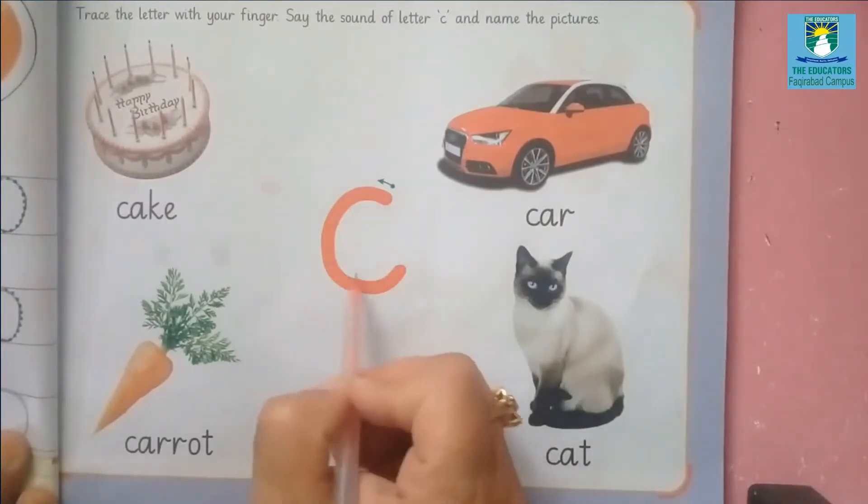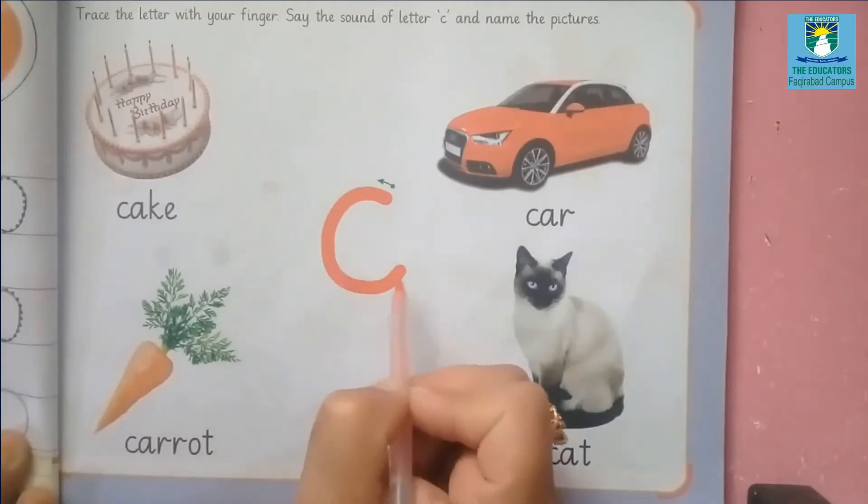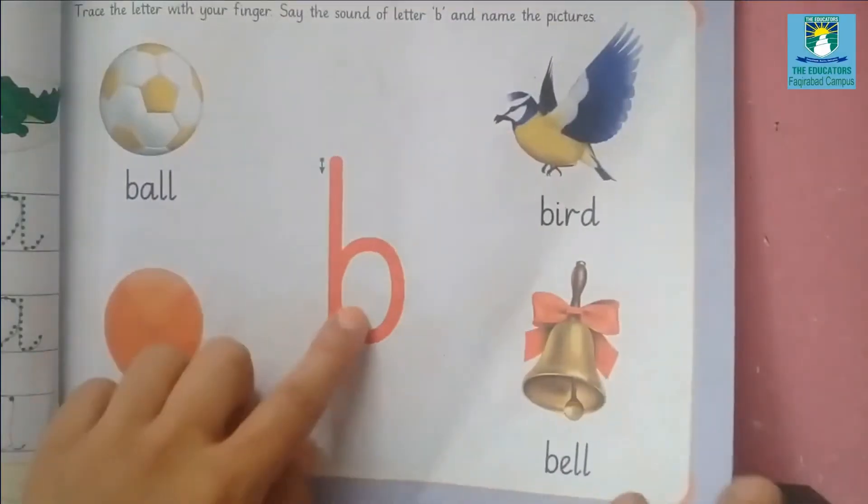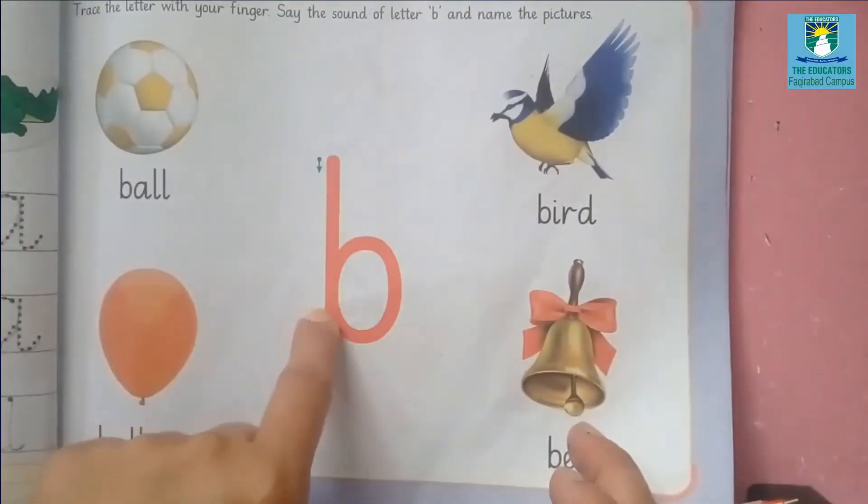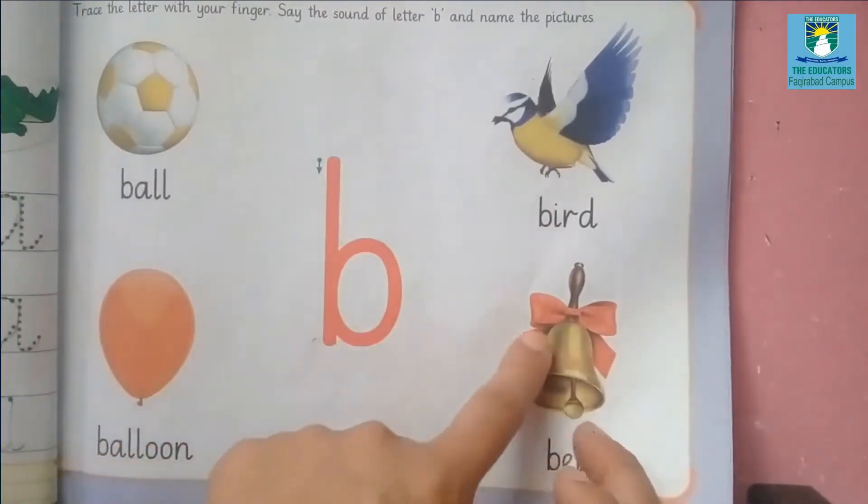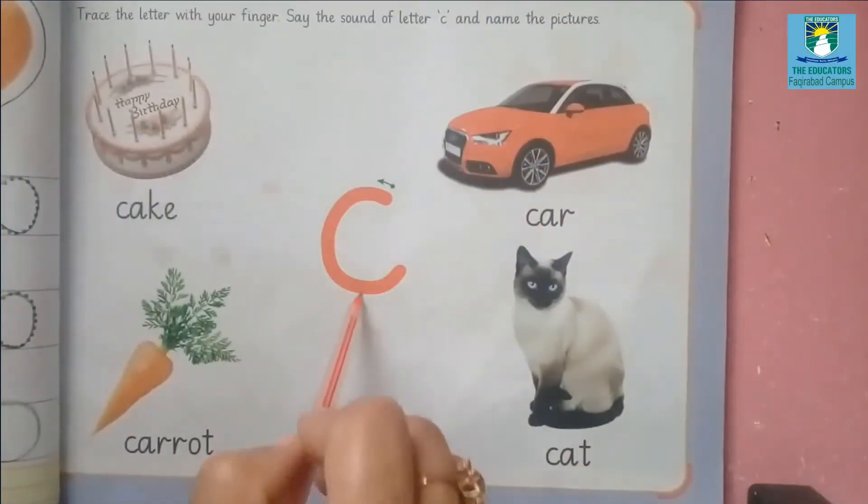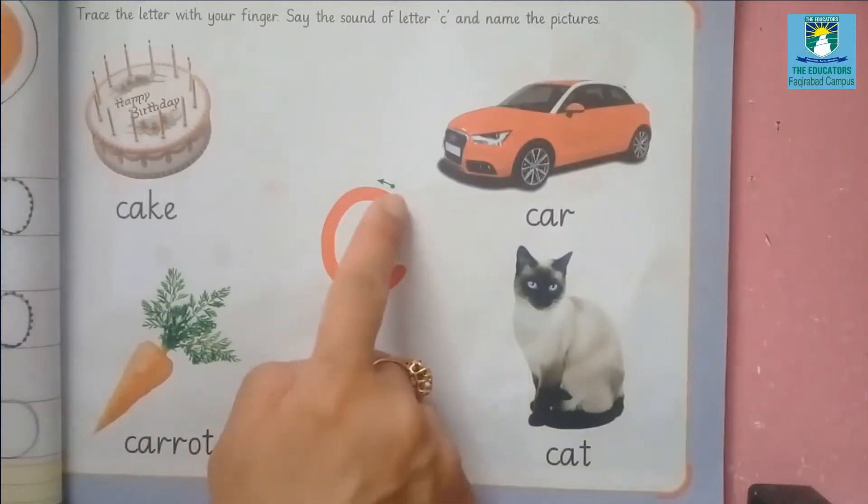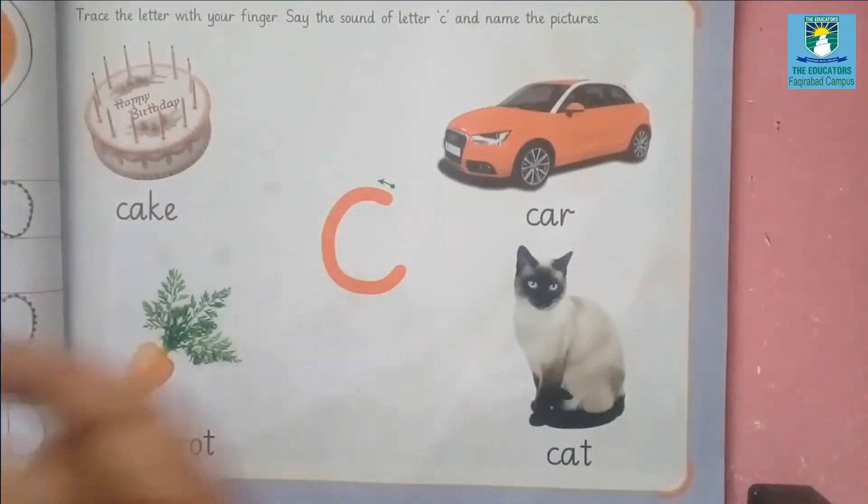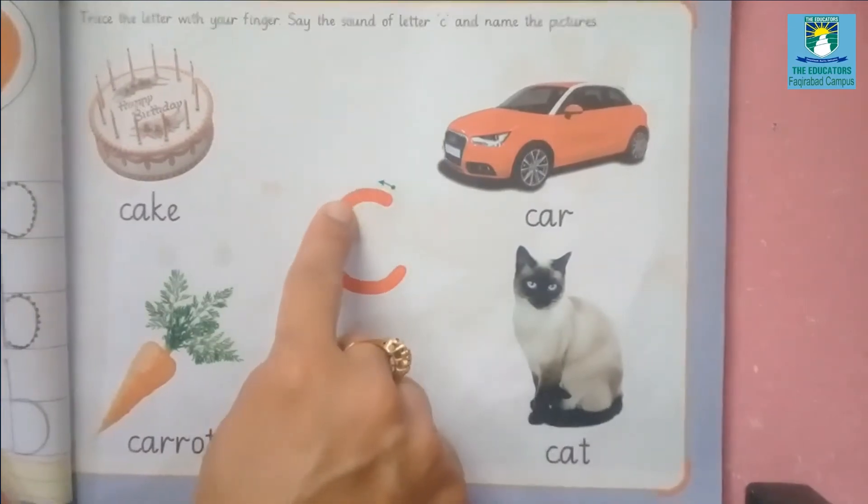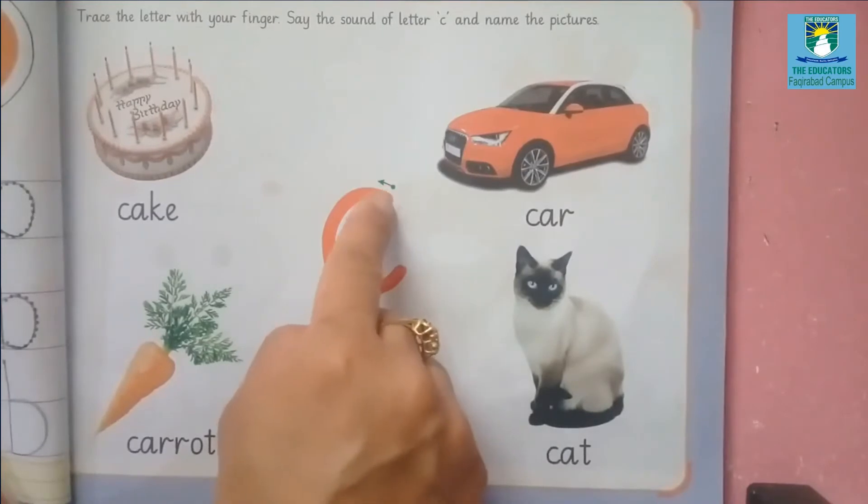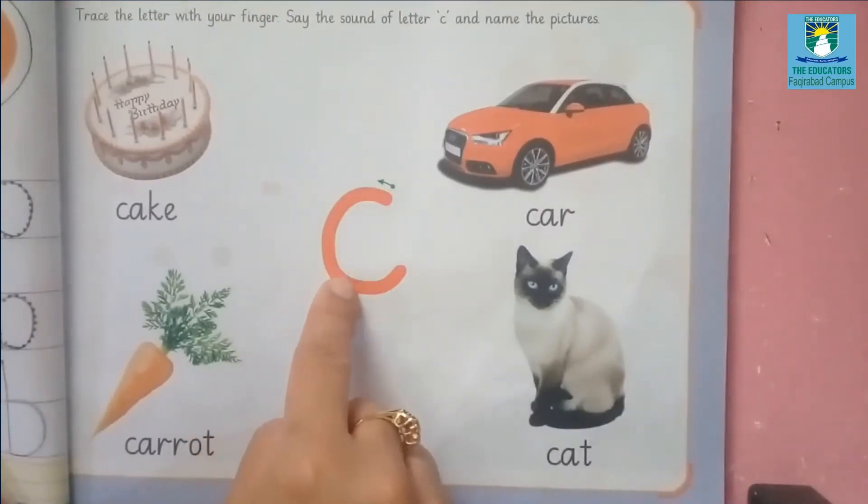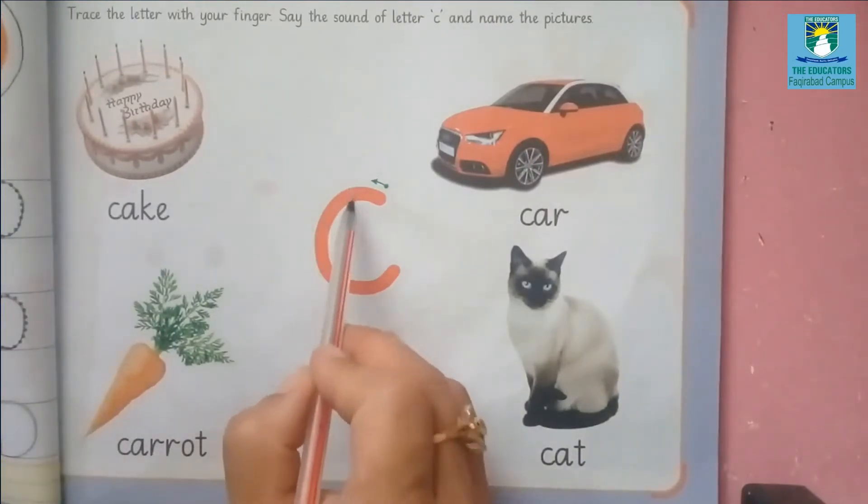Students, this is the letter C. Letter C comes after B. You have read the previous letter, that is B - ball, bird, balloon, bell. Now today we will start to read the letter C. The phonic sound of C is 'k', C-k. Trace the letter with your finger. This is your finger, now trace the letter C. Start from this arrow, start from this point, do like me. Good, this is C-k.